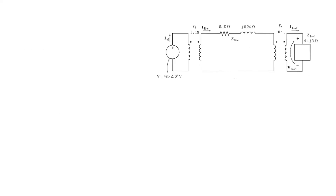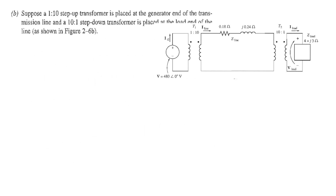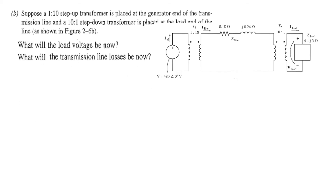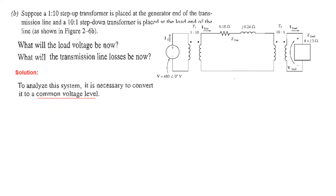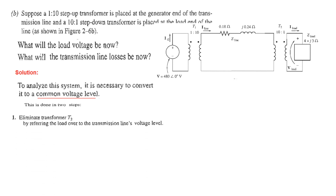Now let us go to Part B — the same system but now connected through two transformers: a step-up transformer T1 (1:10) at the generating station and a step-down transformer T2 (10:1) near the distribution point. To analyze the system, we must convert everything to a common voltage level. This is done in two steps, starting by eliminating transformer T2 through impedance transformation.